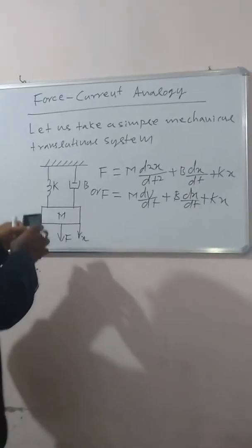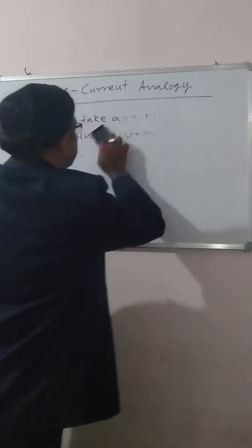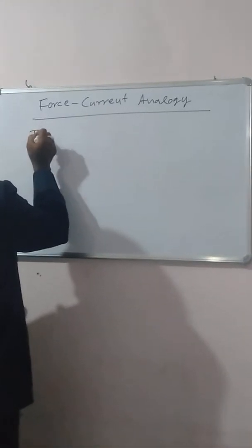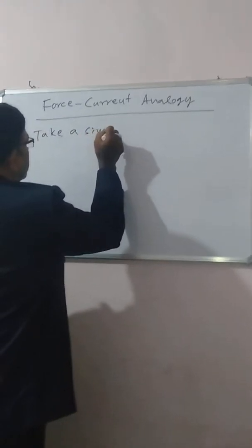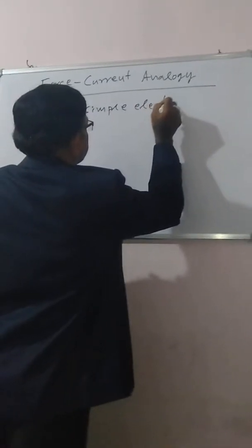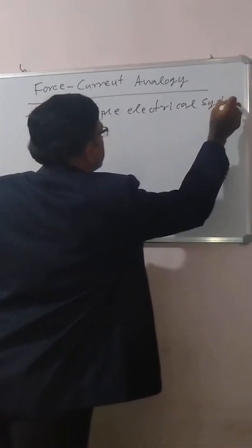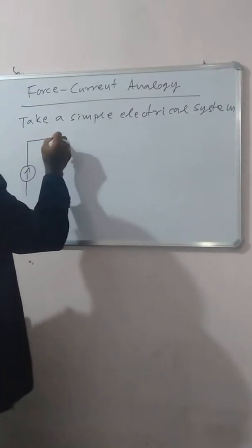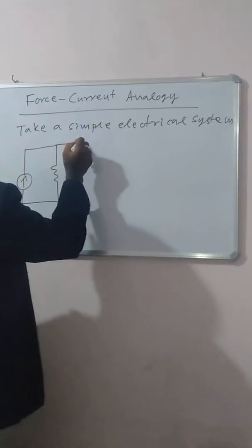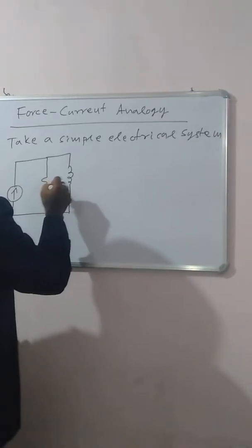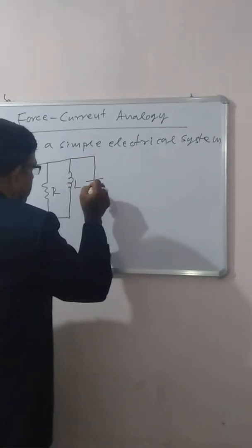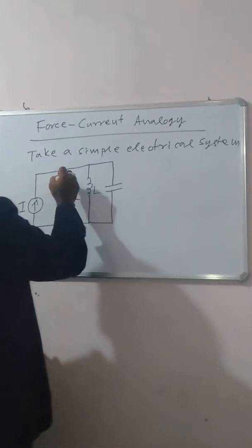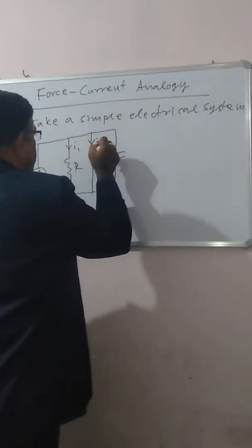Now let us find out what is the electrical system. I have taken a simple electrical system — that is, a parallel RLC circuit. This is the total current I, split into current I1, current I2, and current I3.